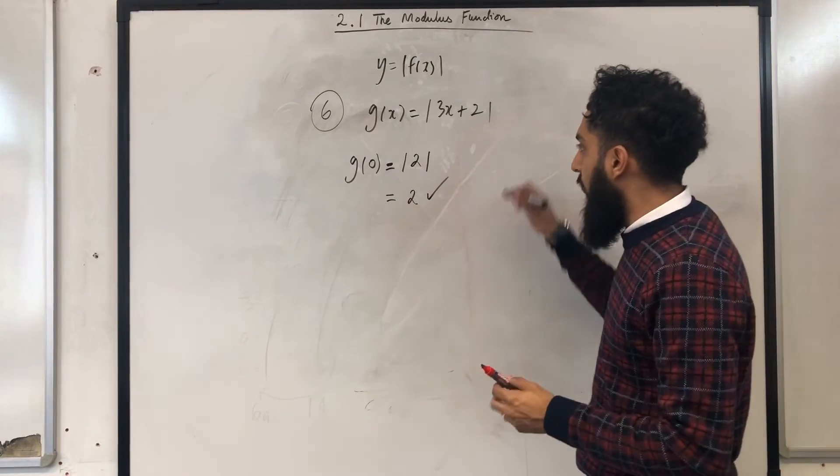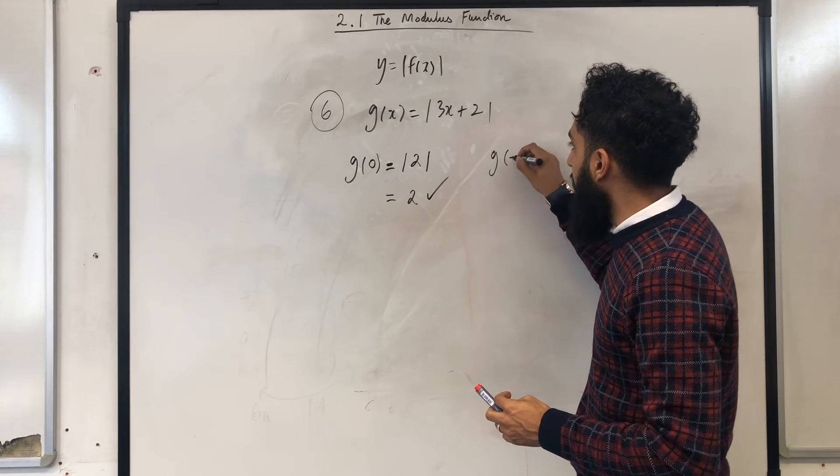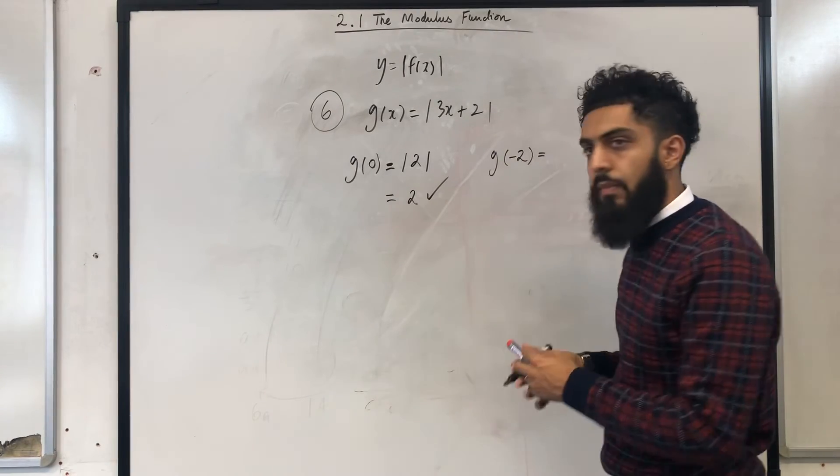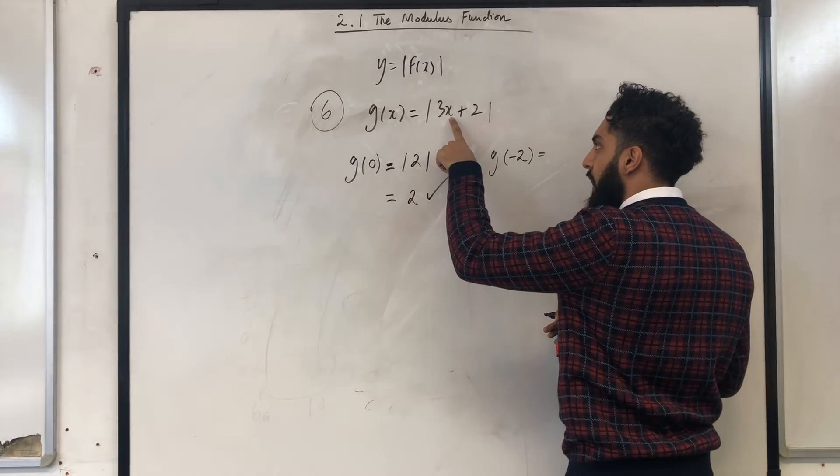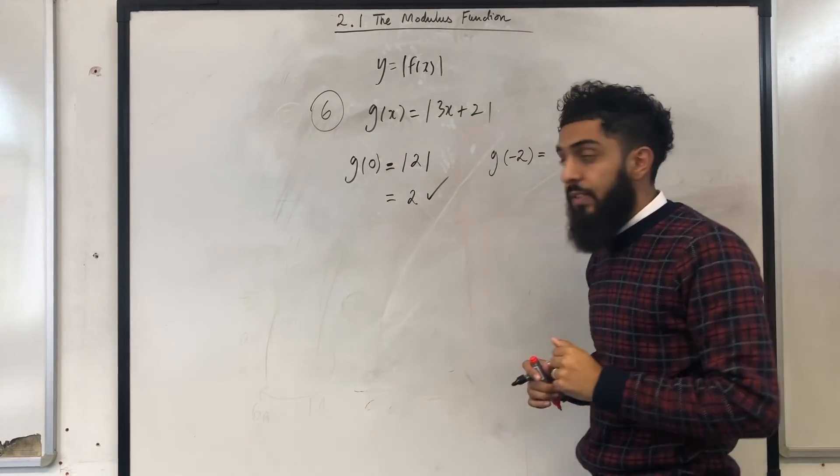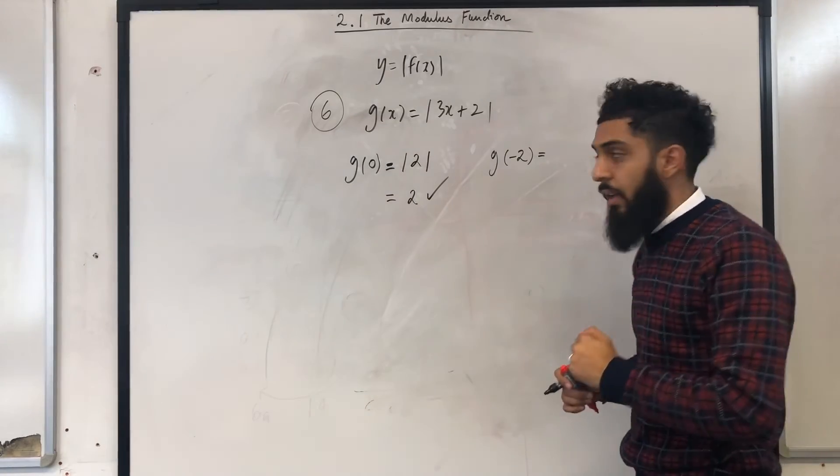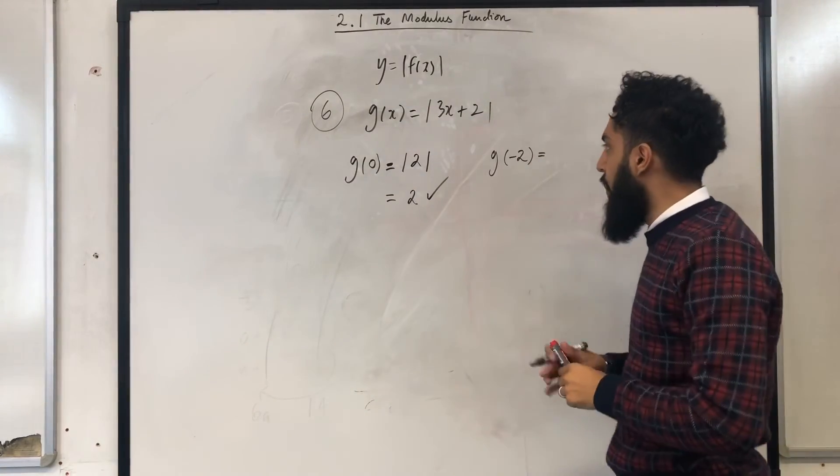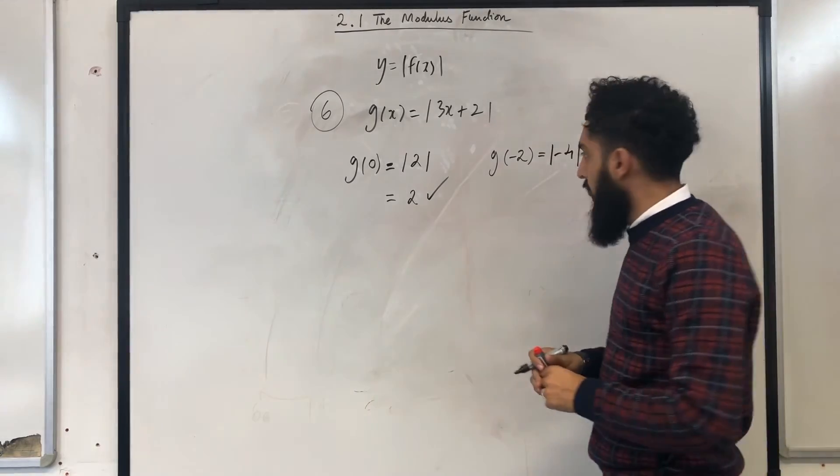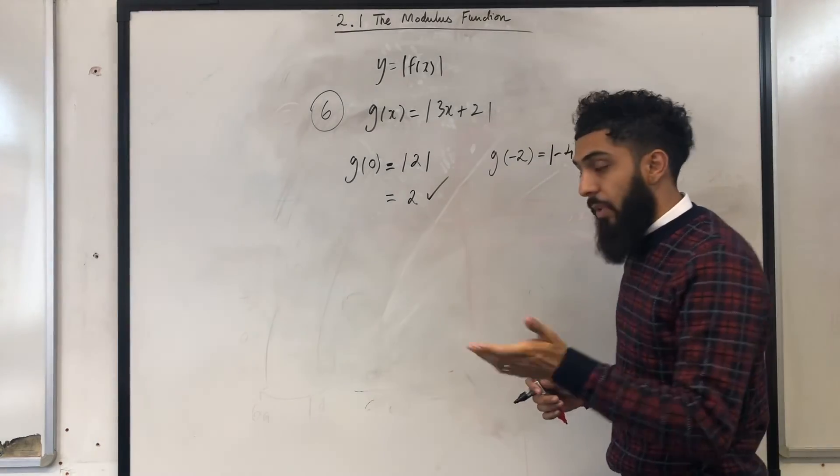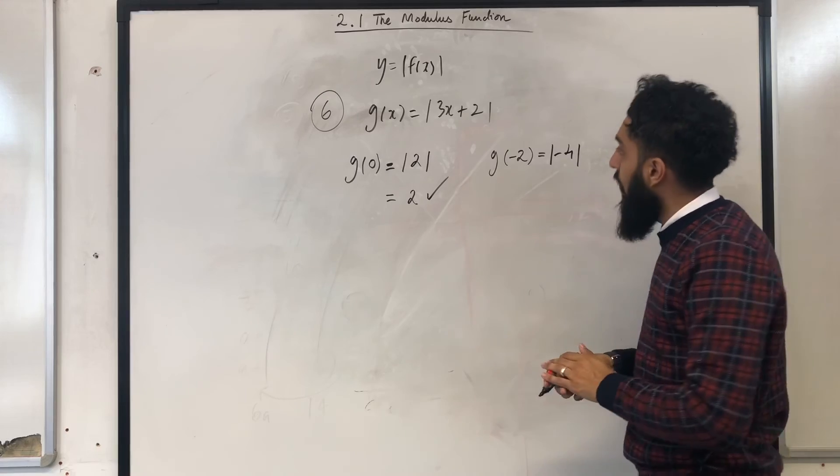Now, I'm going to work out the value of g of minus 2. Again, substitute x equal to minus 2 into the function. 3 times minus 2 is minus 6, plus 2 is minus 4. So the modulus of minus 4. Now, the modulus of minus 4 is 4.